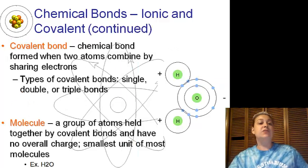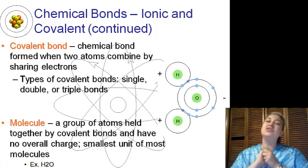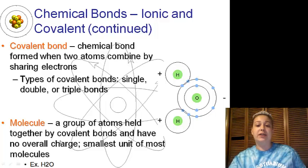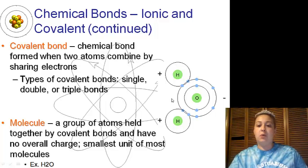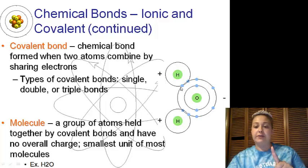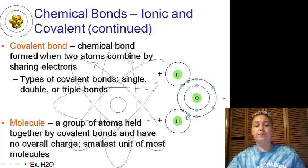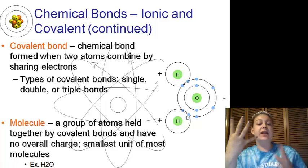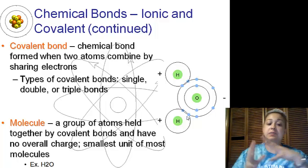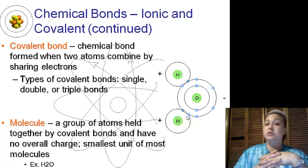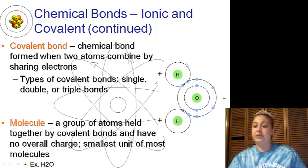Covalent bonds are chemical bonds formed when two or more atoms combine, sharing the electrons. You have a single, double, or triple bond, depending on how many electrons you're sharing. Here we have water. Oxygen has six valence electrons, so it needs two electrons. Hydrogen has one and it's going to share right here. Another hydrogen has one and it's going to share right here. Now oxygen has one, two, three, four, five, six, seven, eight. And each hydrogen has a full outer shell or outer orbit with two. The molecule is held together by a covalent bond, having no overall charge. Smallest units of most molecules, the example is water, H2O.